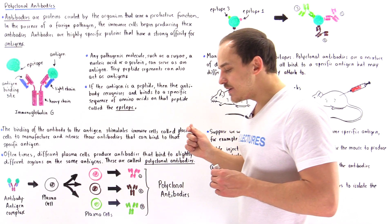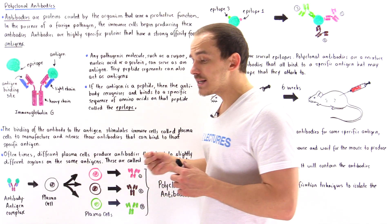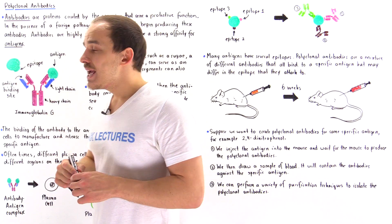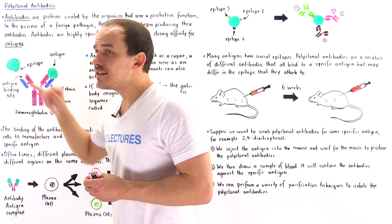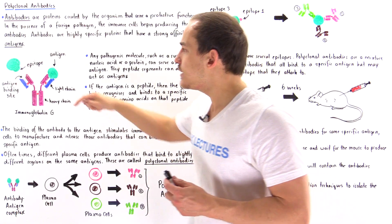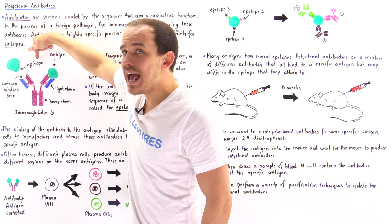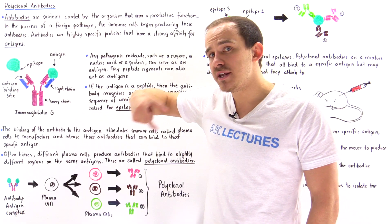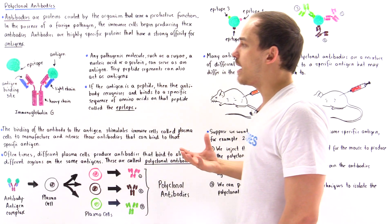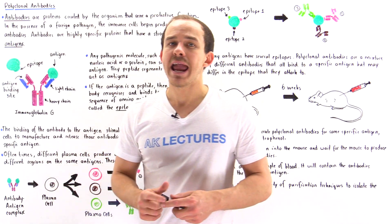On that antibody we have a specific region known as the antigen binding site, and the antigen binding site contains a specific sequence of amino acids that has a high affinity for that antigen. Now the antigens also contain a sequence of amino acids that bind to that antigen binding site of the antibody. So every antigen contains an epitope, which is a specific sequence of amino acids that binds onto the antigen binding site of that immunoglobulin, that antibody. Once that binding process takes place, we form the antibody-antigen complex.